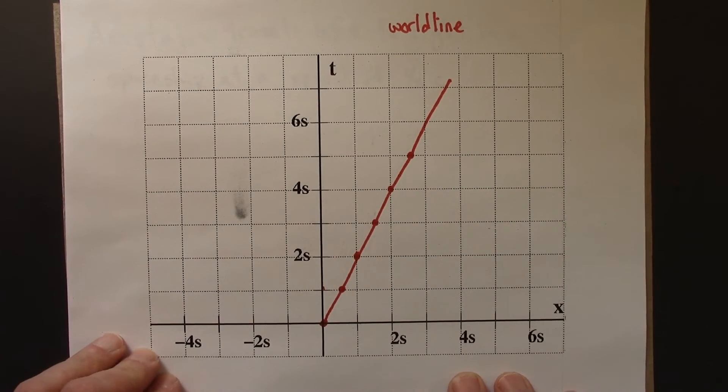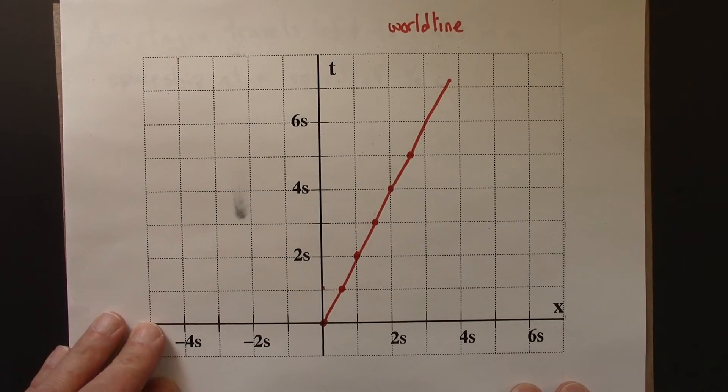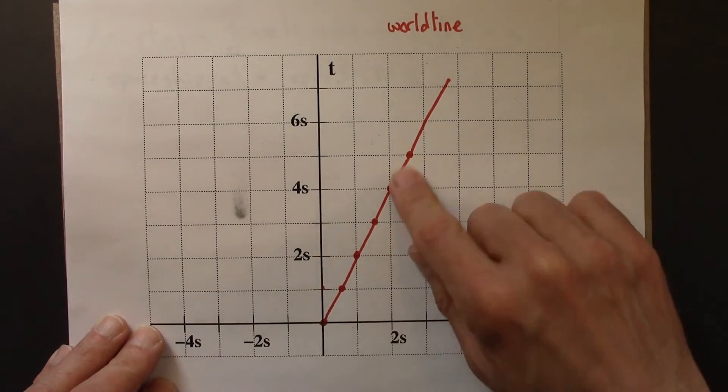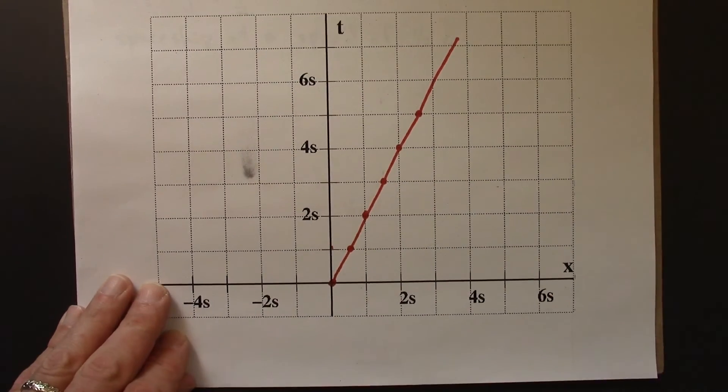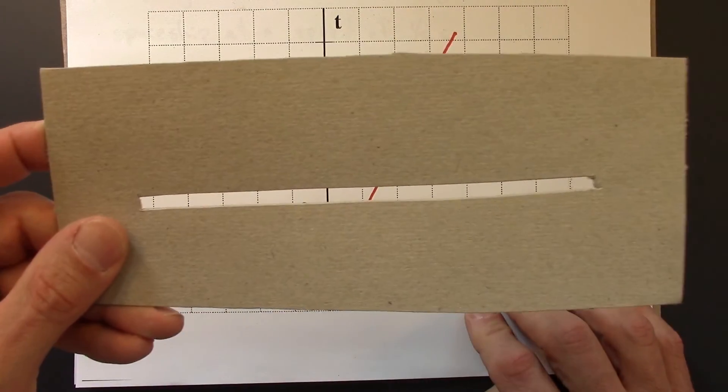Lastly, let me show you another way to visualize what's happening on these spacetime diagrams. You can think of these as movies, movies of position with time flowing up. And you can sort of see that with the use of this. So this is just a piece of cardboard, and I've cut a little slit out.